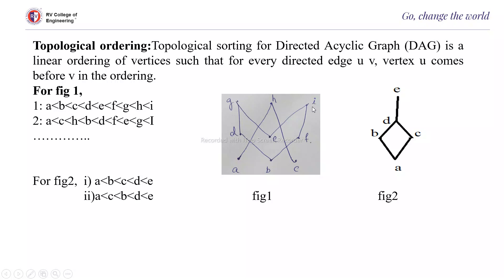Then you can start with G, H, I. This is one of the order. So likewise, for any poset, you can write the topological ordering.